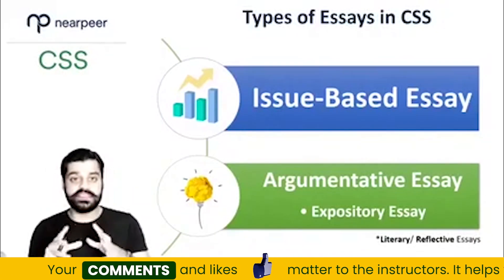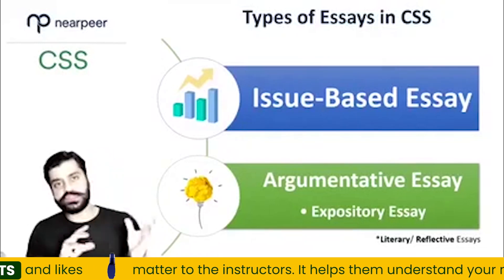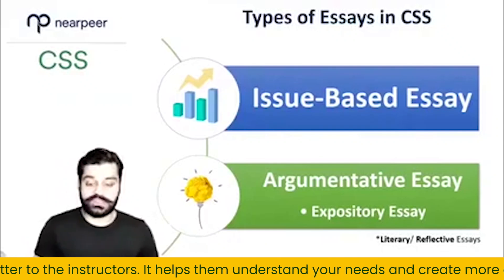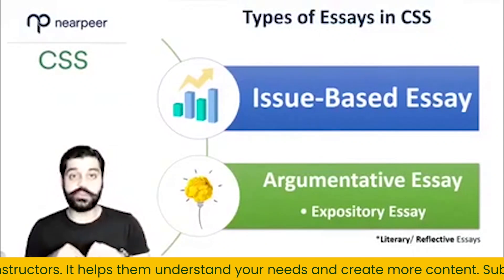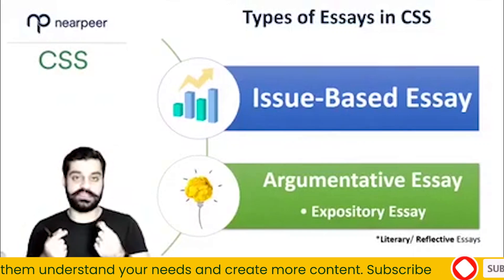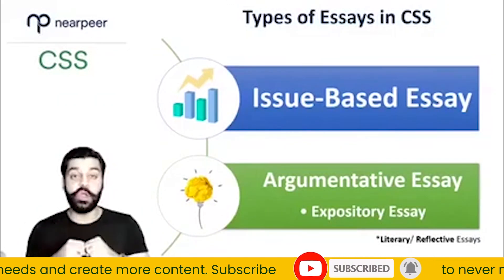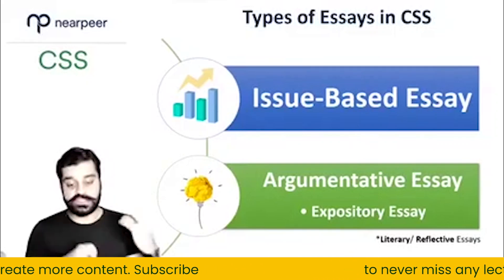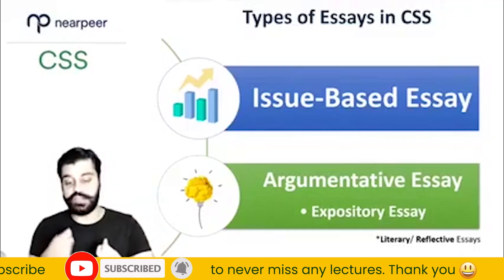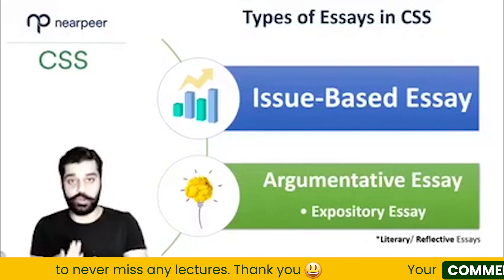Topics like water scarcity in Pakistan or constitutional issues of Pakistan are on a specific issue — these are issue-based essays. Argumentative essays, on the other hand, are the ones that exist on some idea. That is why they are different from issue-based essays. Issue-based essays are very specific and issue-centered, while argumentative essays are idea-centric, more general, and more broad.